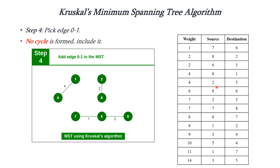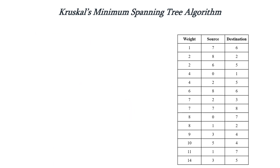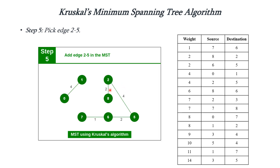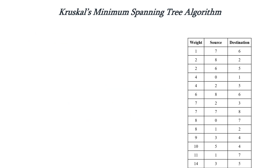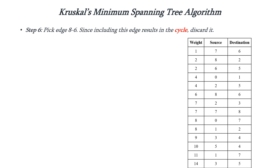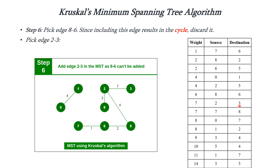Next in the order we have the edge with source 2 and destination 5. We already have vertices 2 and 5, so we connect them. It is not forming any cycle, so we pick the edge and connect 2 and 5 with weight 4. Next we have edge 8-6 — if we connect these, it will form a cycle, so we discard it. We move to the next row: source 2, destination 3 with weight 7. It is not forming any cycle, so we include it.